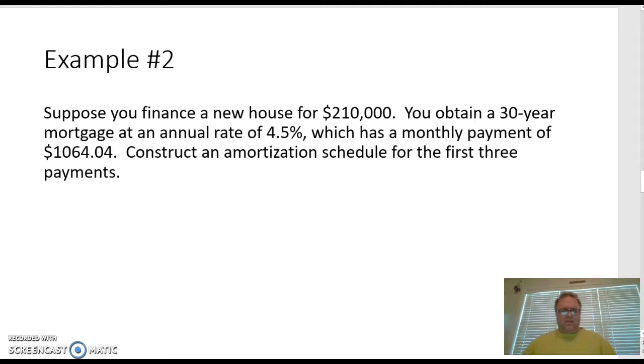Suppose you finance a new house for $210,000. You obtain a 30-year mortgage at an annual rate of 4.5%, which has a monthly payment of $1,064.04. You might want to try to use that formula before to see if you can verify that. We're going to construct an amortization schedule for the first three payments. Remember, there's going to be a lot of payments. This is 30 years times 12, so you're looking at 360 total payments over the course of this loan.